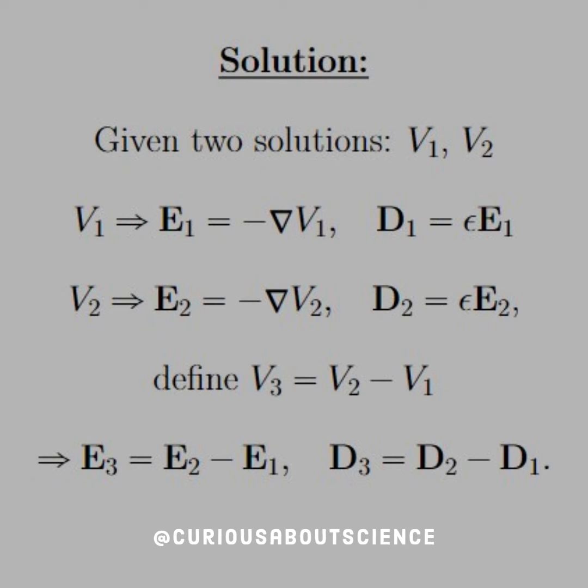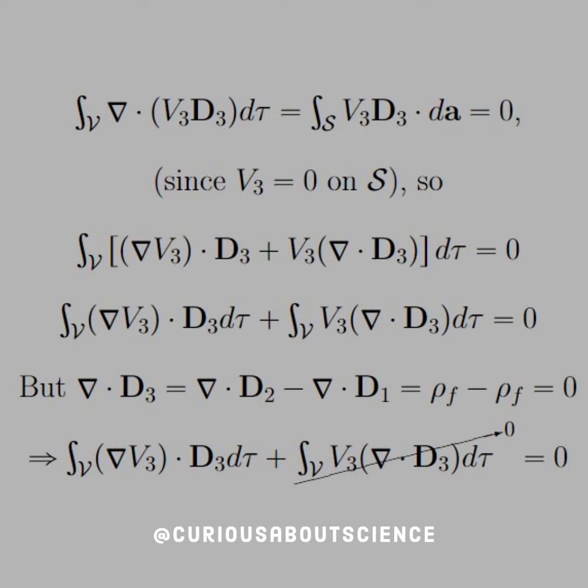So if we're given those two, then we can define a third, V3, which is equal to the difference of V2 and V1. Apply that through to the electric field and the electric displacement accordingly. Now what we can do is integrate over the entire space and apply the divergence theorem, as we see in the integrals here.